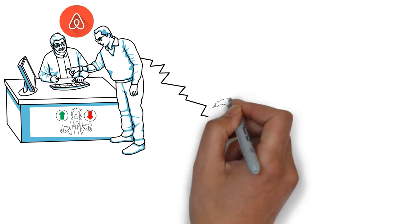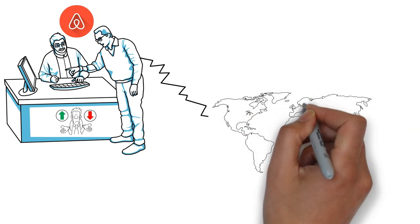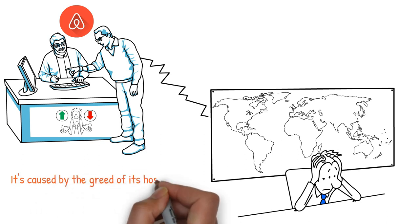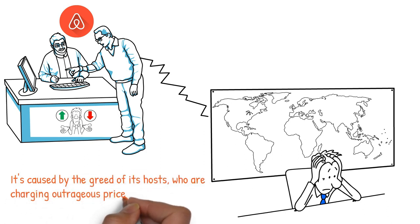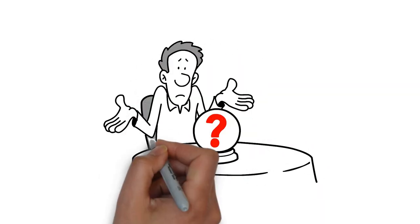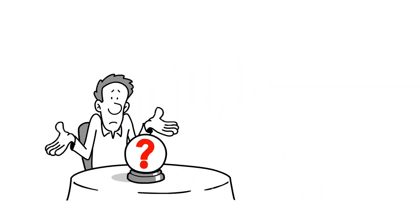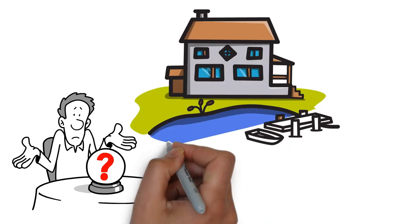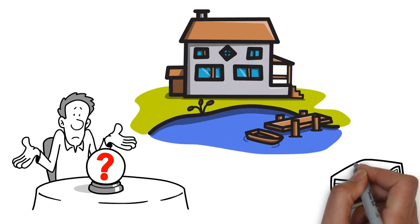In essence, Airbnb's downfall is not caused by external factors like the pandemic or economic downturns. It's caused by the greed of its hosts, who are charging outrageous prices, evicting long-term tenants, and ruining people's vacations. And unless Airbnb can address these issues, its future is uncertain. So if you're planning a trip soon, maybe consider one of the alternative home-sharing platforms instead. Trust me, your wallet will thank you.